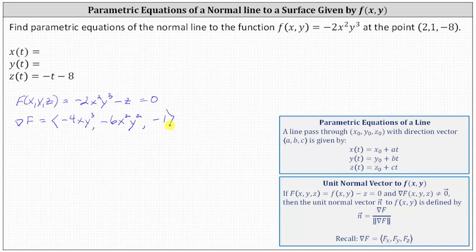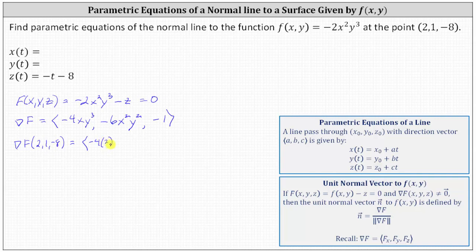To find a normal vector at the point (2, 1, -8), we evaluate the gradient of F at that point. The x-component is -4 × 2 × 1³, the y-component is -6 × 2² × 1², and the z-component remains -1.